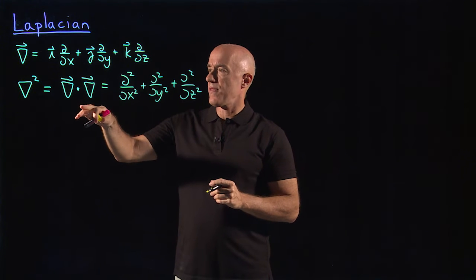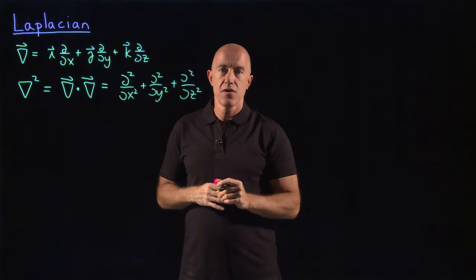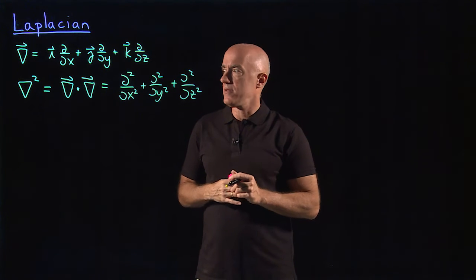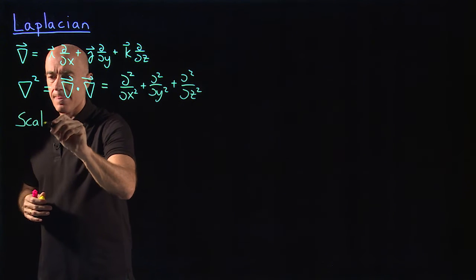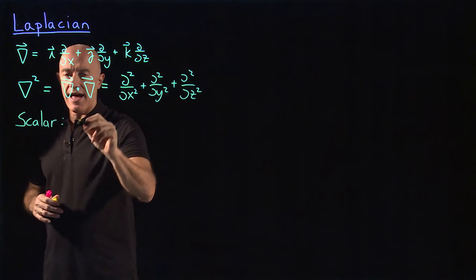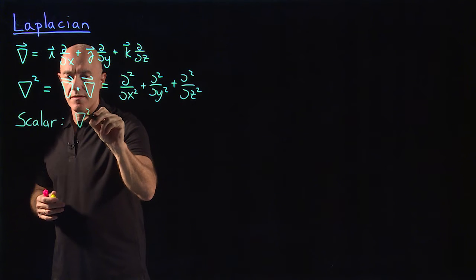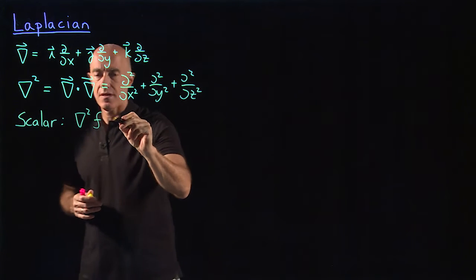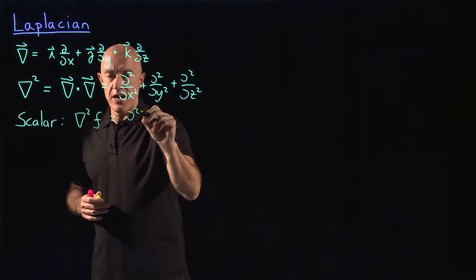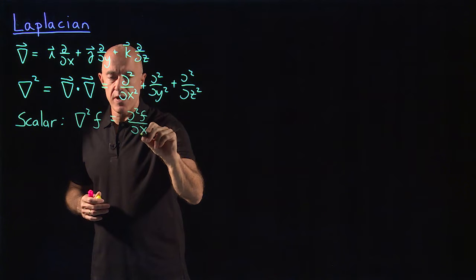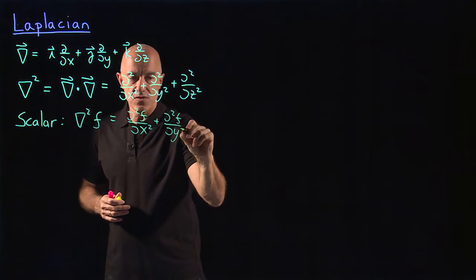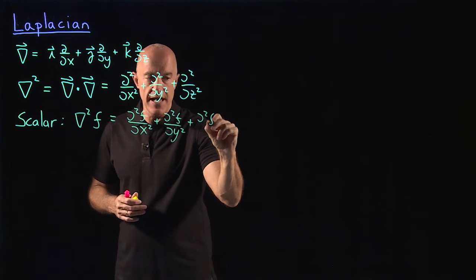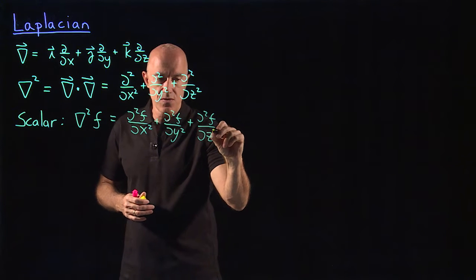It can act on both a scalar field or a vector field. So for a scalar field, we would have del squared f would be d squared f dx squared plus d squared f dy squared plus d squared f dz squared.